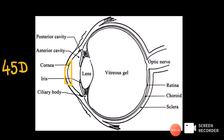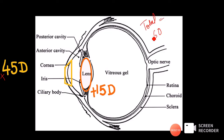Regarding refractive power: the cornea itself has a power of about +45 diopters. The lens has a power of about +15 diopters. Adding both together, the total dioptric power of the eyeball comes to about +60 diopters — the plus indicating that the eyeball is acting as a converging lens.